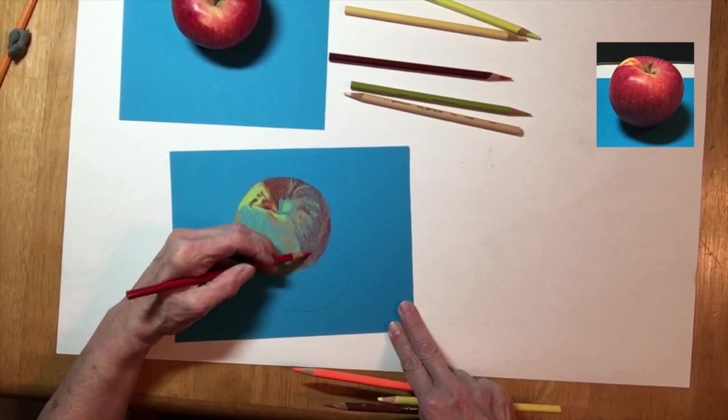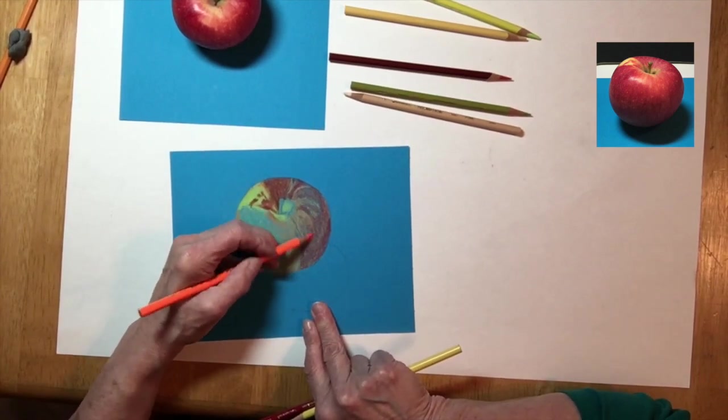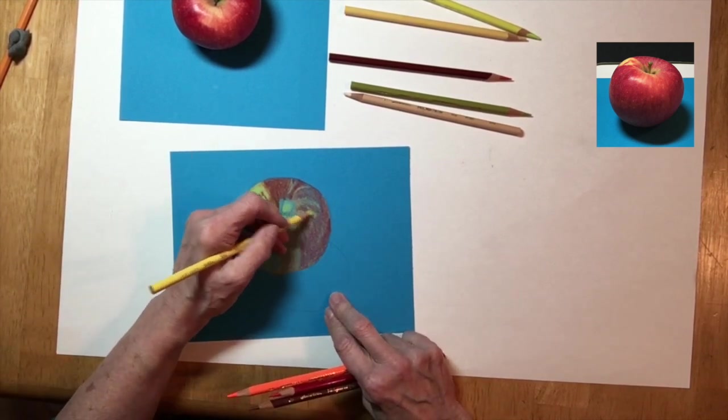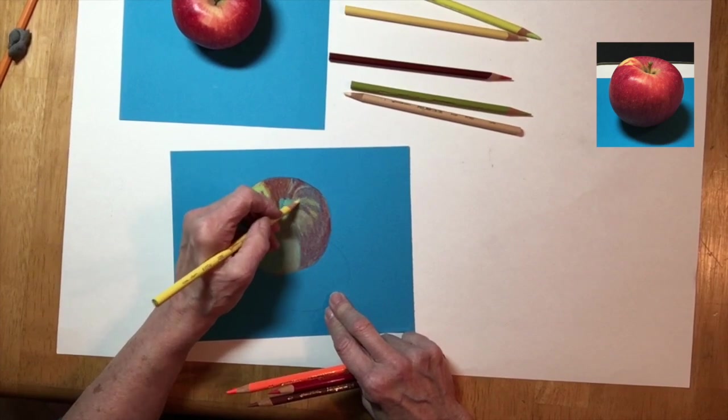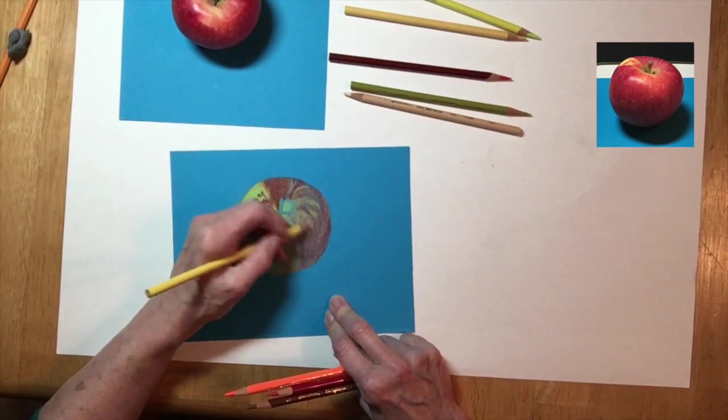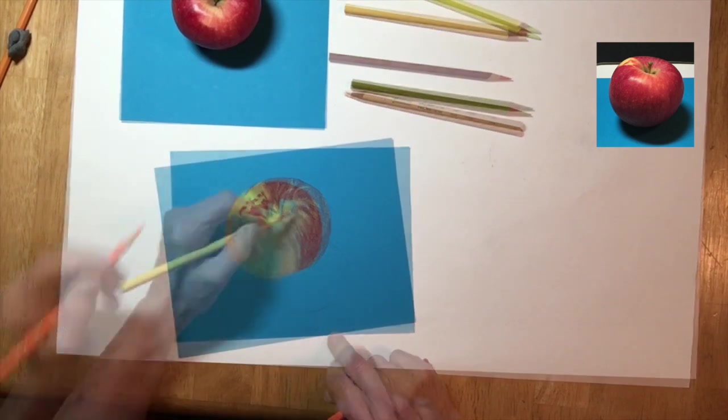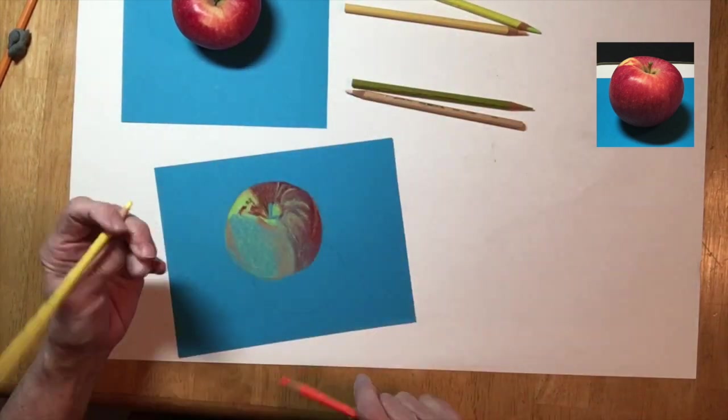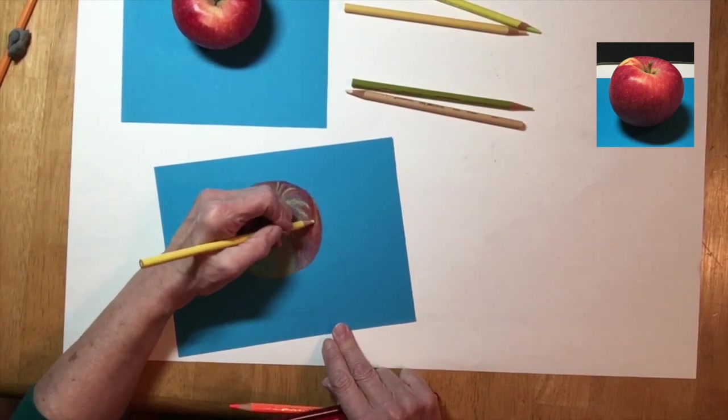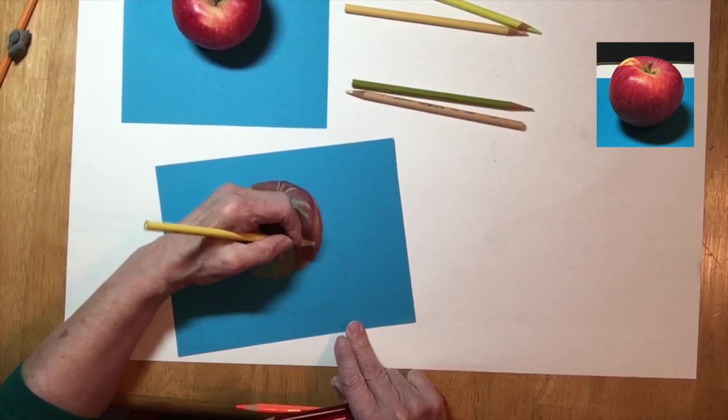You can see that the color is now starting to build up, but I've got a long way to go. I usually keep a couple pencils in my hand as I work back and forth between them. I'm always using my eyes to look at my object—you see the real apple above my drawing paper, and a photograph in the picture-in-picture on the right. I drew from real life, but this gives you the opportunity to see basically the view that I was seeing when I was drawing.